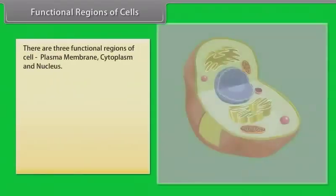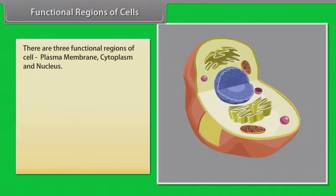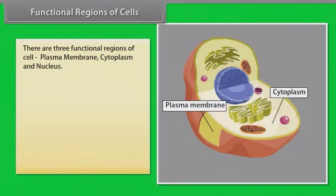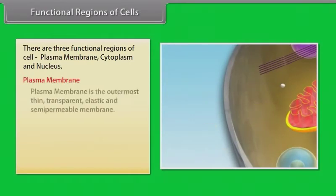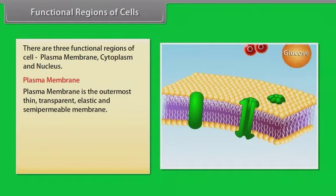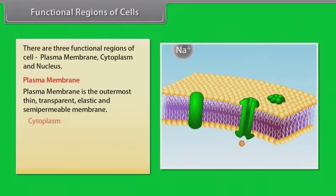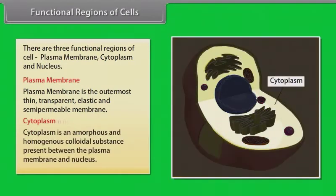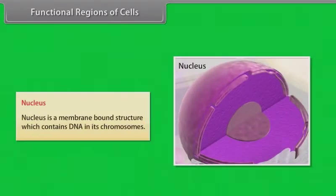There are three functional regions of a cell: plasma membrane, cytoplasm and nucleus. The plasma membrane is the outermost thin, transparent, elastic and semi-permeable membrane. Cytoplasm is an amorphous and homogeneous colloidal substance present between the plasma membrane and nucleus. The nucleus is a membrane-bound structure which contains DNA in its chromosomes.